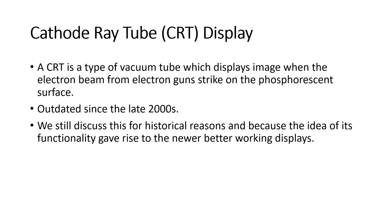CRT stands for cathode ray tube. It is a type of vacuum tube which displays images when the electron beam from the electron guns strikes the phosphorescent surface inside the device. It is a very old technology and has been superseded by flat panel displays like LCD, LED, and plasma displays since the late 2000s, but we still discuss it for historical reasons and because its design gave some ideas for newer displays.